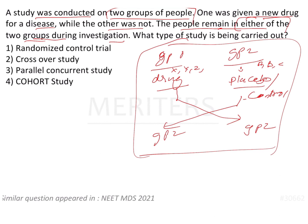So what type of study is being carried out here? The options given are: RCT, crossover study, parallel concurrent study, and cohort study.